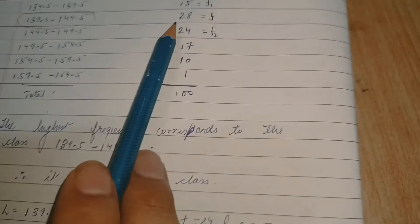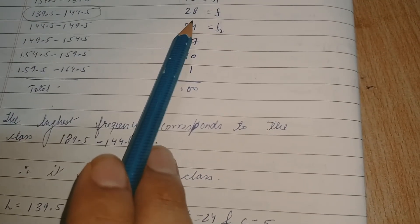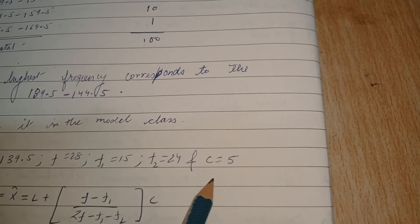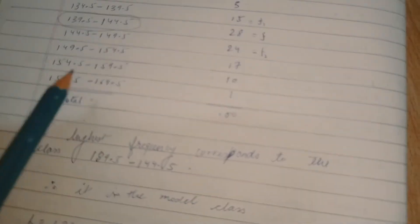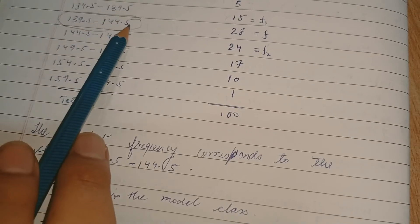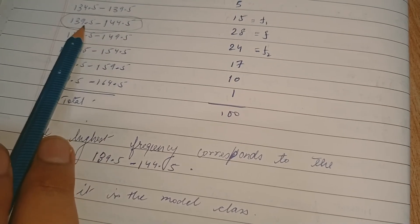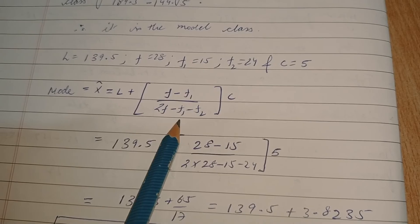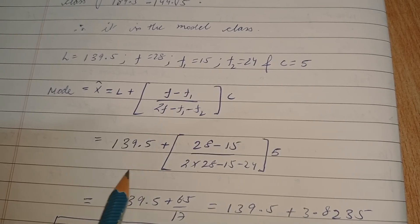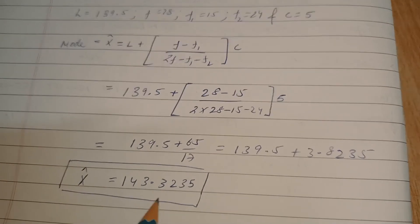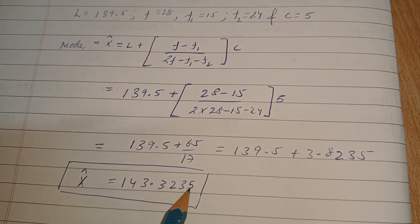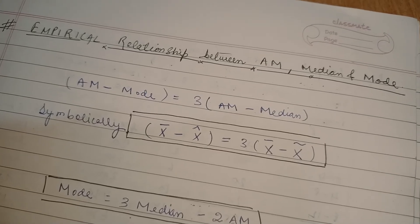What is c? C is the class length. What is the length of the class? That is 5, 144.5 minus 139.5. Now simply put all those values in the formula. This is the formula I explained you, and it would result, mode equals 143.3235.